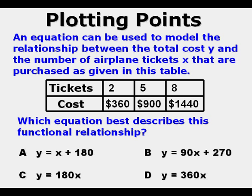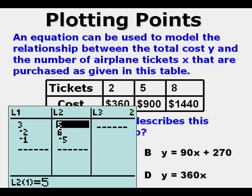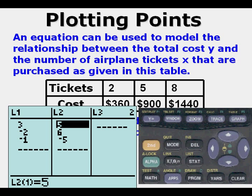We can use the stat feature and we're going to clear out the existing points we entered earlier. To do that, we're going to arrow up to L2, and when we arrow up to L2, we then press clear. After pressing clear, we press the down arrow and it clears out all those y coordinate values.